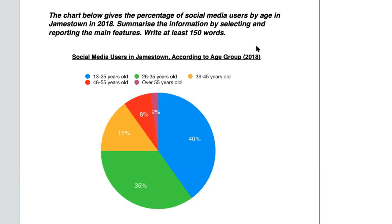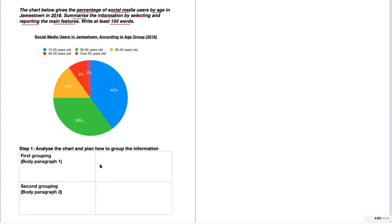Now let's take a look at our first writing prompt. The chart gives the percentage of social media users by age in Jamestown in 2018. Summarize the information by selecting and reporting the main features, and write at least 150 words. We have to analyze the chart and plan how to group this information. This is probably the biggest question when it comes to pie charts — it may not be as obvious as bar charts or line graphs as to how to group the information.